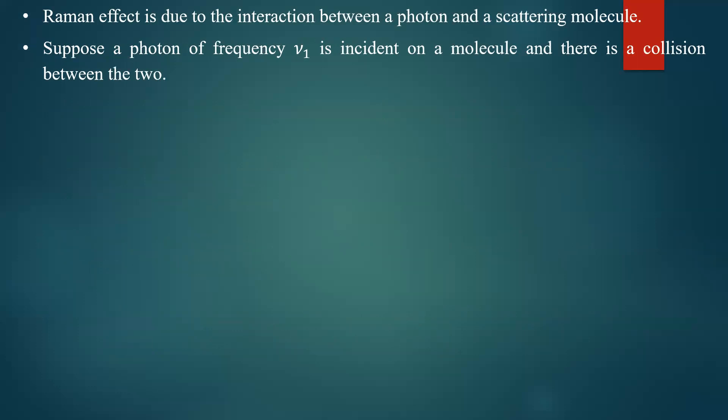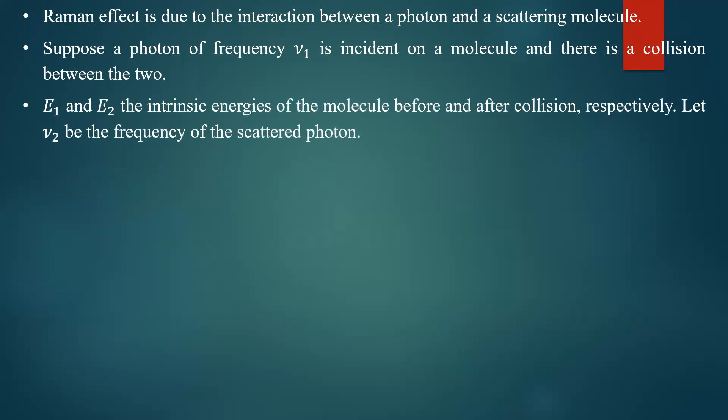Suppose a photon of frequency nu1 is incident on a molecule. Let e1 and e2 be the intrinsic energies of the molecule before and after collision respectively, and let nu2 be the frequency of the scattered photon. So nu1 is the incident frequency, nu2 is the scattered frequency, and e1, e2 are the molecule's energies before and after collision.